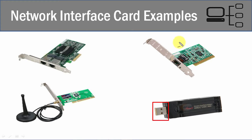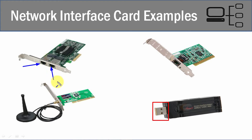This is your standard expansion card — one that is cabled and one that is Wi-Fi. However, when you get into the server world, you are going to need a higher level of redundancy. You'll see network interface cards that have two ports, so redundancy is built in. If one of the ports goes down or if the cable breaks or there's an issue, the second one will take effect.